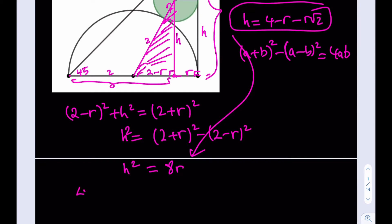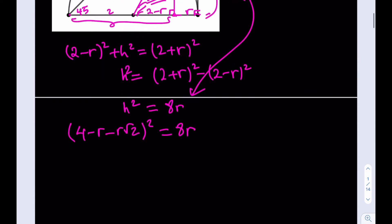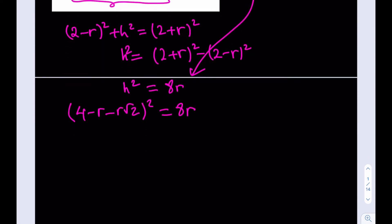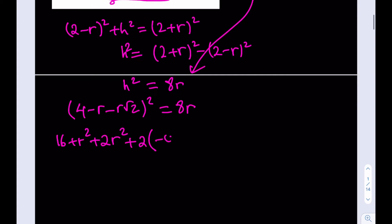Let's go ahead and do that. Replace h with 4 minus r minus r√2. I need to square that, and that's going to equal 8r. Now, this equation is going to have interesting solutions. Make sure you watch till the end to see what happens. So, let's go ahead and expand the left-hand side. The left-hand side looks like (a + b + c)² so I'm going to use that formula. a², b², and c² plus 2 times the quantity ab, which is -4r, plus ac, which is going to be a negative sign here. So, that's going to be minus 4√2 r, plus bc, which is √2 r².